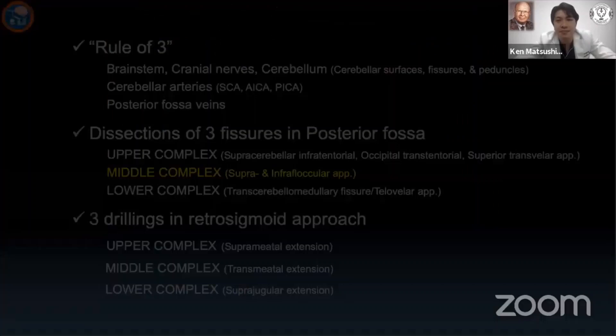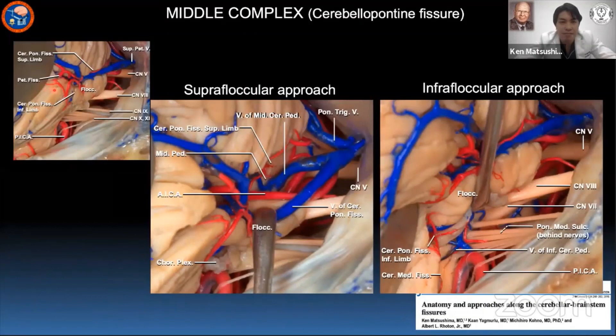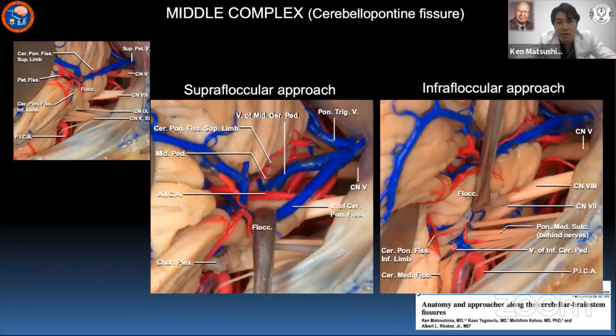The superior and inferior limbs of the cerebellopontine fissure and the petrosal and postcerebral fissures meet at the suprafloccular cistern — an optimal site to open the lateral recess to drain CSF and identify the vein of the cerebellopontine fissure, the major branch of the petrosal group. In the retrosigmoid approach, opening the lateral recess along the superior limb of the cerebellopontine fissure provides wider access to the middle cerebellar peduncle and the trigeminal nerve, and opening the inferior limb allows elevation of the flocculus and choroid plexus to expose the root exit zone of the facial nerve, the posterior surface of the inferior cerebellar peduncle, and the pontine surface deep to the nerves.